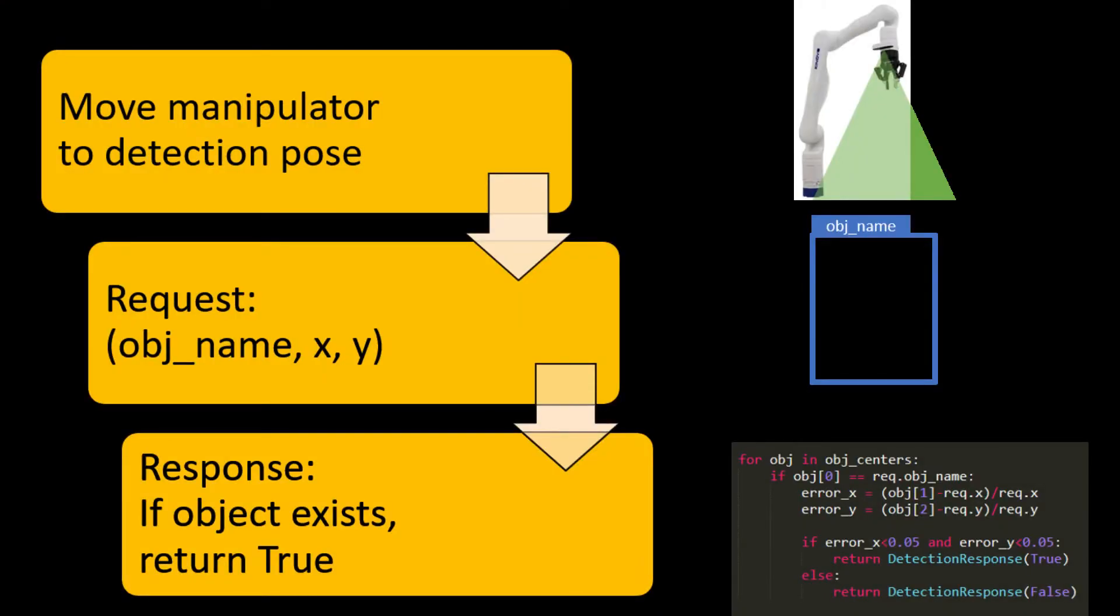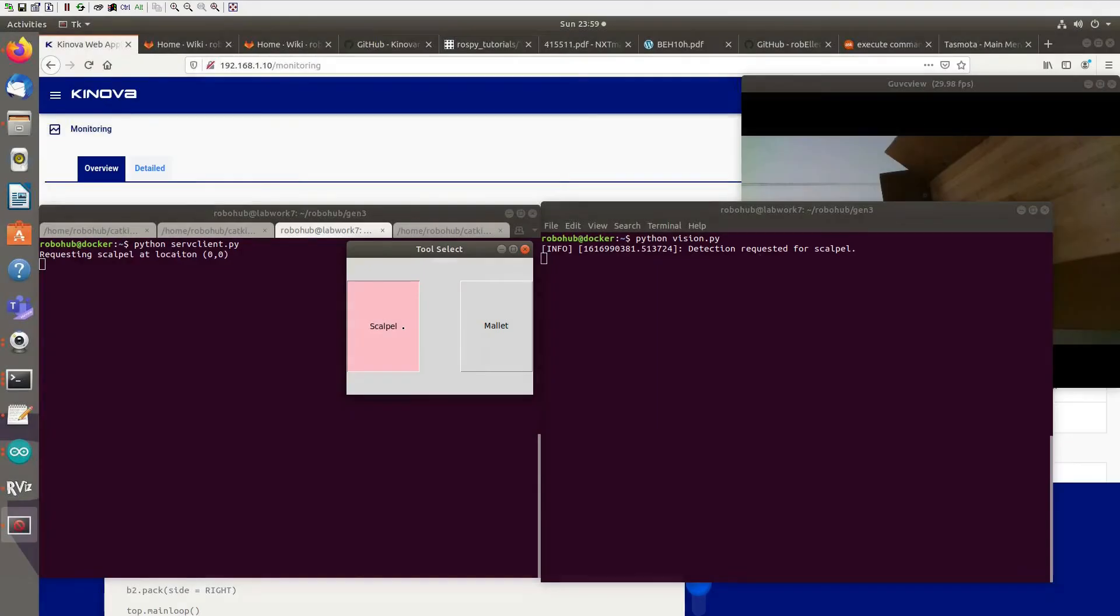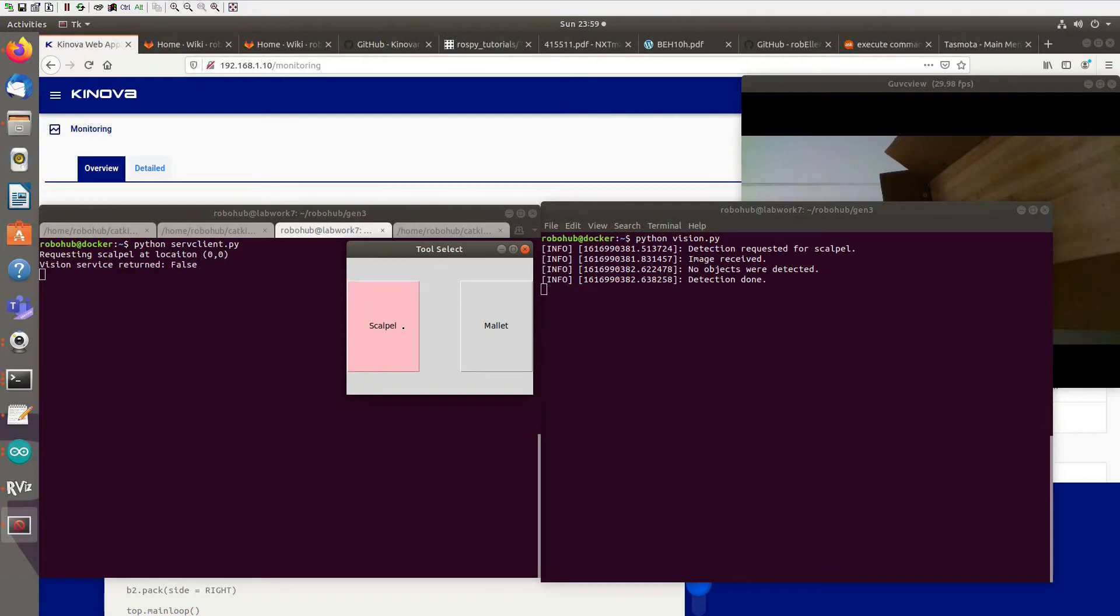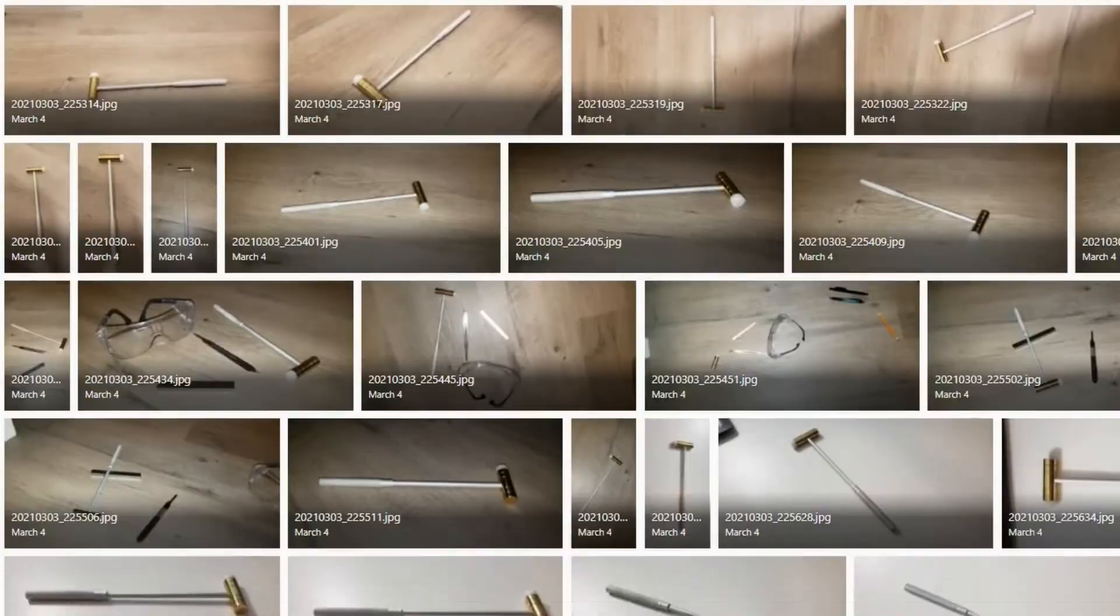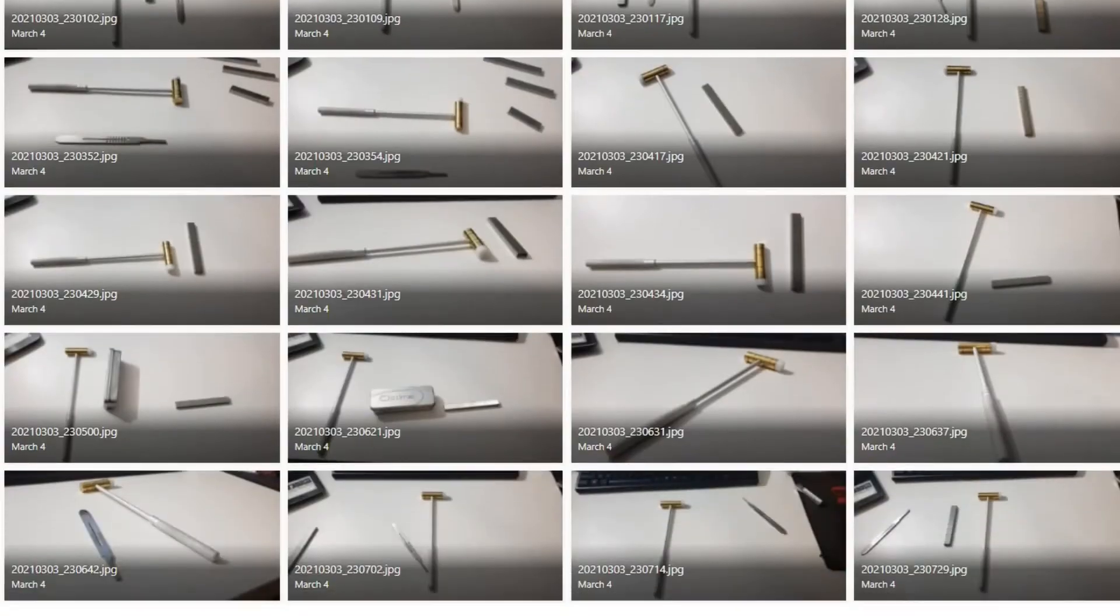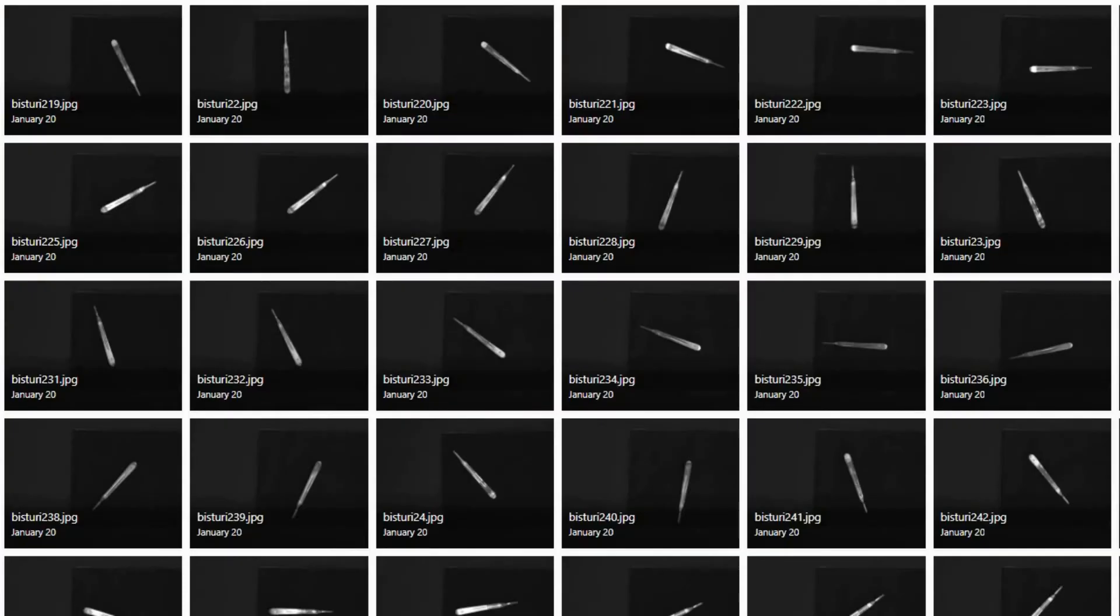Instead, an object detection method using computer vision was implemented, using the shape of the tool itself for information. This prototype uses an open-source YOLO V3 vision model to get fast, yet accurate object detection results from the onboard Intel RealSense camera to identify between a scalpel and a mallet. This method can be scaled up in the future simply by training a new model with new tools.